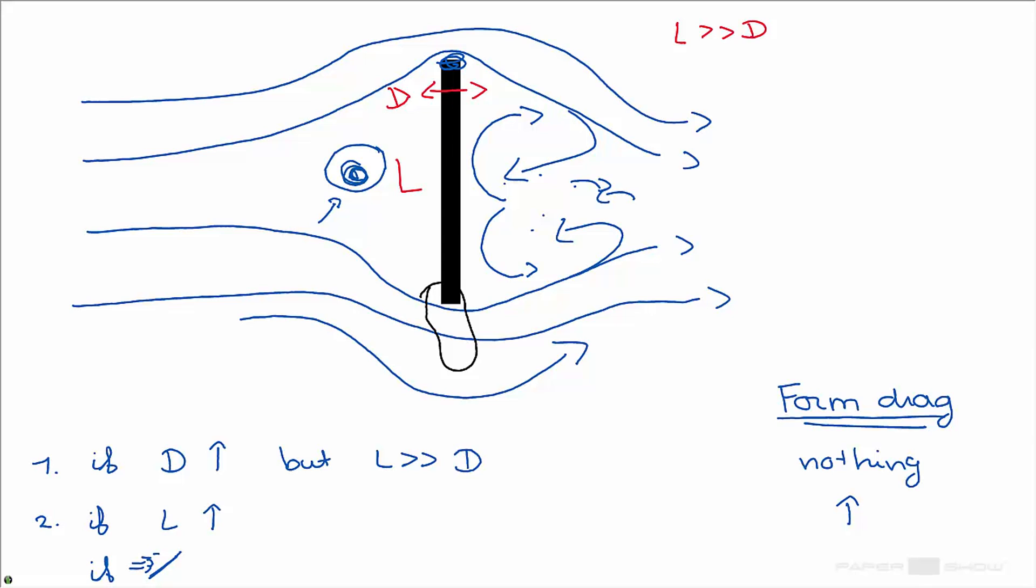Now what if we would change the direction or the orientation? So let me draw this a little bit bigger. The flow would be coming in here and would flow around the object, also creating a stagnation point over here and of course some vortices and such over there.